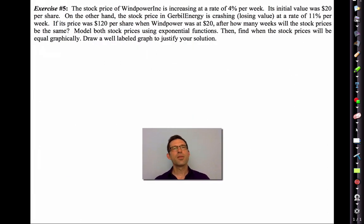Last problem. The stock price of Wind Power Inc. is increasing at a rate of 4% per week. Its initial value was $20 per share. On the other hand, the stock price of Gerbil Energy is crashing. It's losing value at a rate of 11% per week. If its price was $120 per share when Wind Power is $20, how many weeks will it take for the stock prices to be the same? Model both stock prices using exponential functions, then find when the stock prices will be equal graphically. Draw a well-labeled graph to justify your solution.